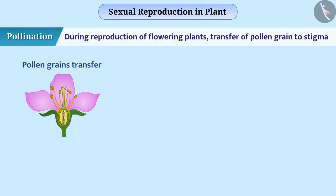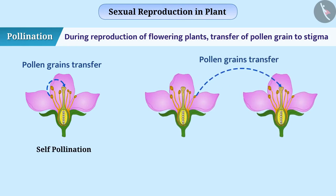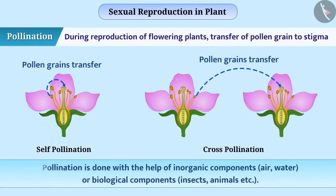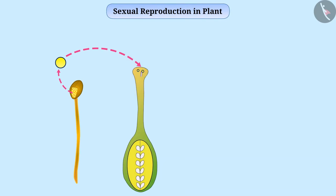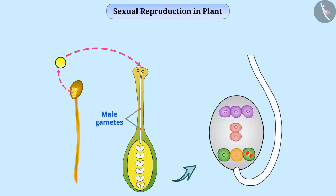If the pollen grain is transferred from the anther of a flower to the stigma of the same flower, it is called self-pollination. When pollen grain is transferred from the anther of one flower to the stigma of another flower, it is called cross-pollination. Pollination is done with the help of inorganic components such as air and water, or biological components such as insects and animals. When pollen grains land on the stigma, a tube develops from the pollen grain which passes through the style and reaches the embryo sac of an ovule. Two male gametes enter the embryo sac from the pollen grain.